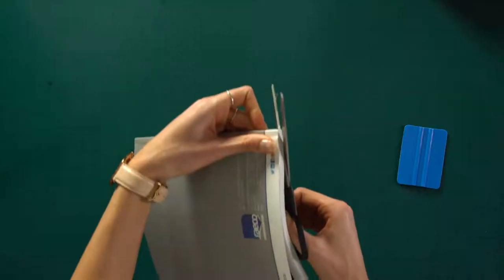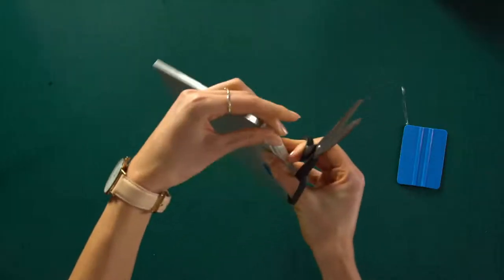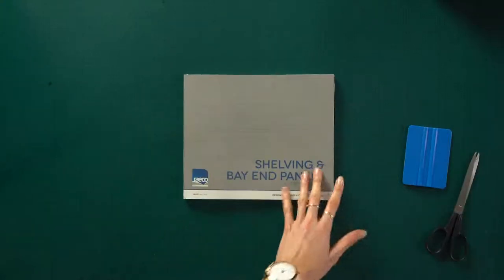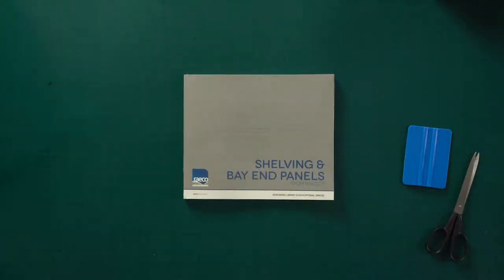Trim the tabs on the spine. You can see there is very little wastage with Duraceal. Ensure you use a squeegee tool to help prevent air pockets.